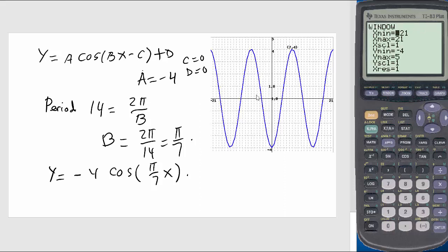We have negative 21 to 21 for x window, and then y window goes from negative 4 to 5. So I put it like this according to this graph, and then we graph it. See, exact matching with this, so we are done.